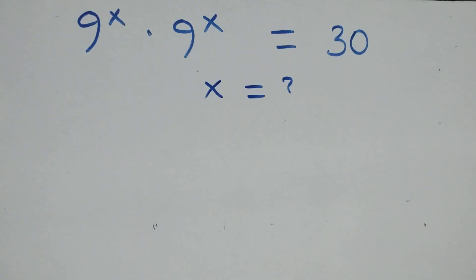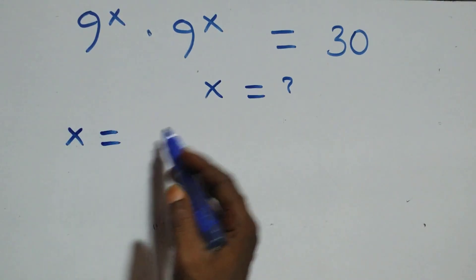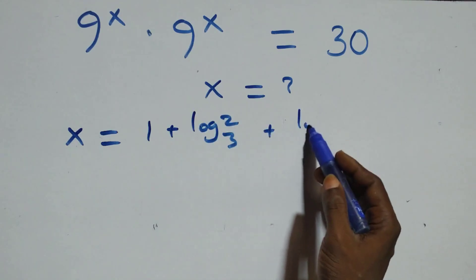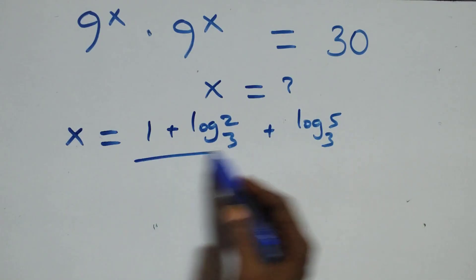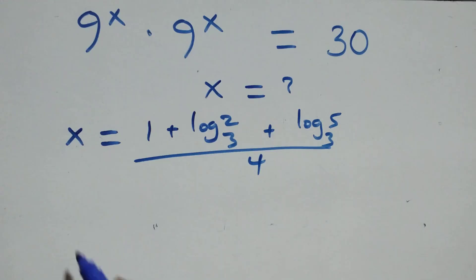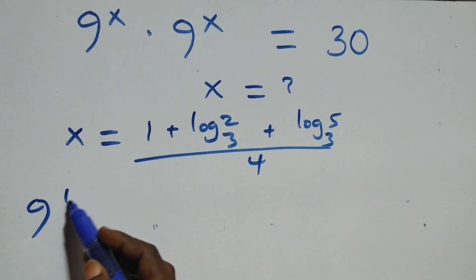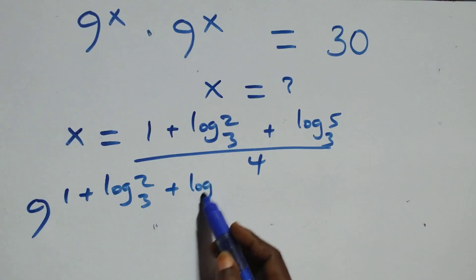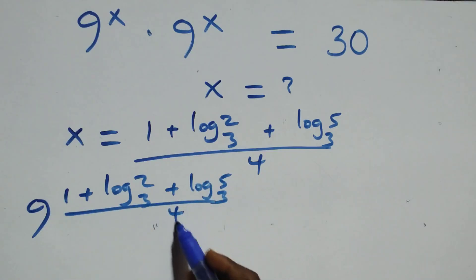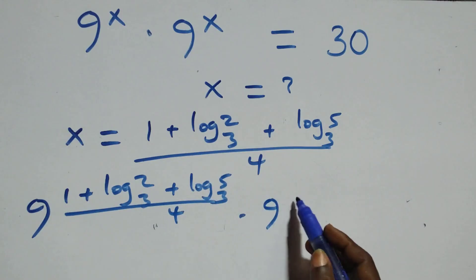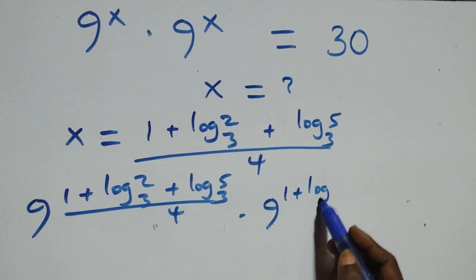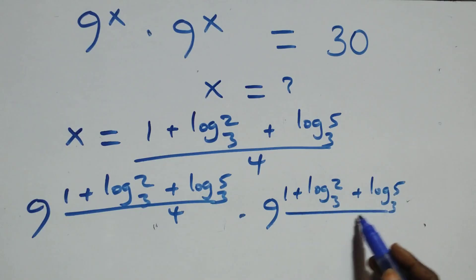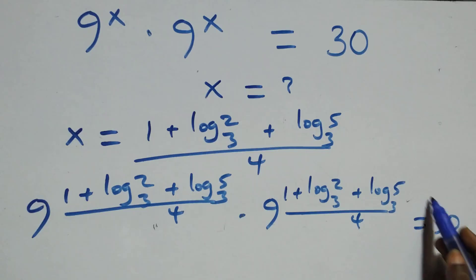Let's check: substituting x equals (1 + log₃2 + log₃5) / 4 into the original equation, we get 9 raised to power (1 + log₃2 + log₃5)/4, times 9 raised to power (1 + log₃2 + log₃5)/4, equals 30.